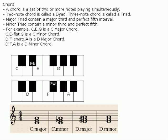A major triad contains a major third and perfect fifth interval. A minor triad contains a minor third and perfect fifth interval.